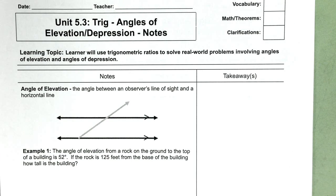Okay, in this last section, 5.3, we're going to use our trig ratios to solve real-world problems using angles of elevation and depression. So we're going to start with angle of elevation. It is the angle between an observer's line of sight and a horizontal line.